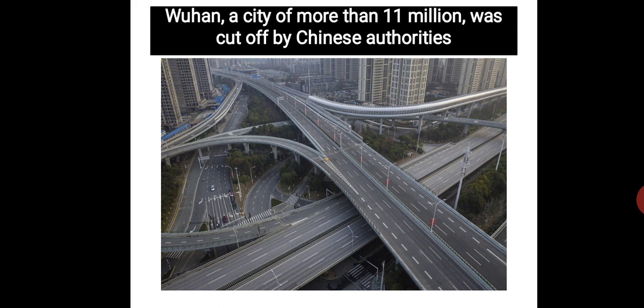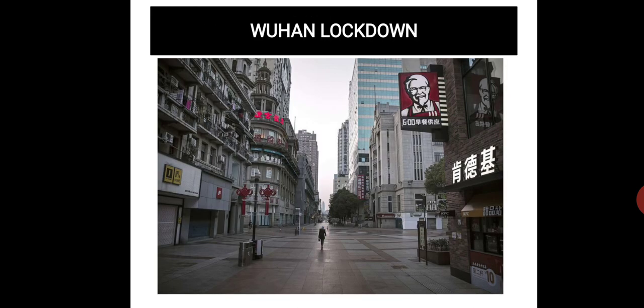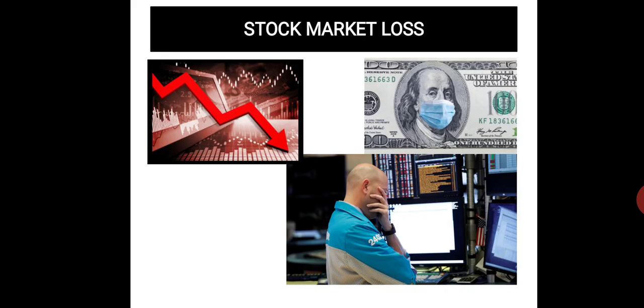Wuhan, a city of more than 11 million, was cut off by Chinese authorities through a lockdown, as this is where coronavirus originated — in the Hubei province of China. No person was allowed in markets; all markets were closed, and people stayed home to prevent virus transmission. This outbreak also caused significant stock market losses and multiple economic problems worldwide.